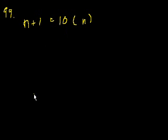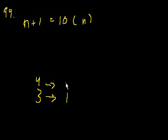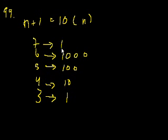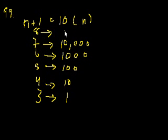If a reading of 3 is 1, then a reading of 4 is 10 times that, reading of 5 is 100, reading of 6 is 1,000, reading of 7 is 10,000, and a reading of 8 is 100,000.